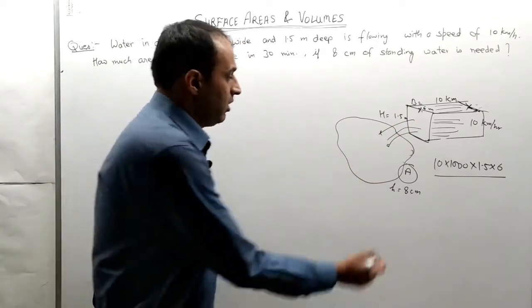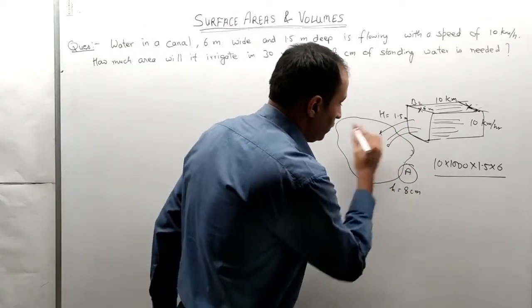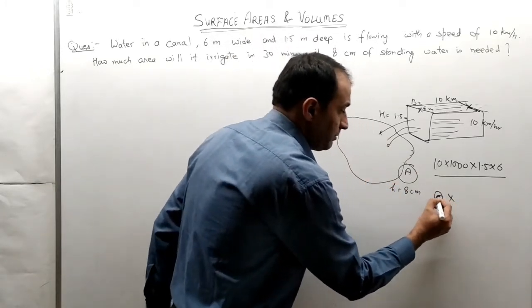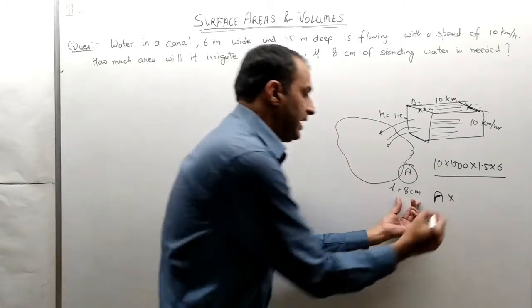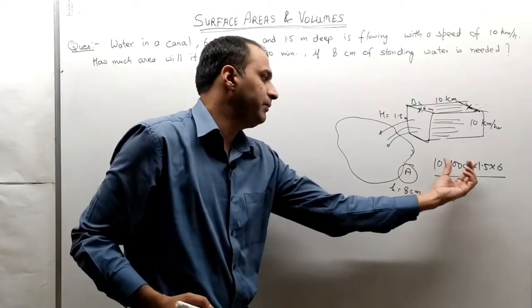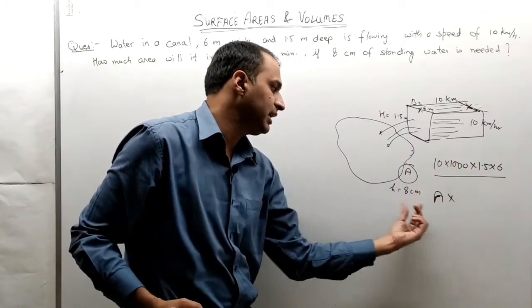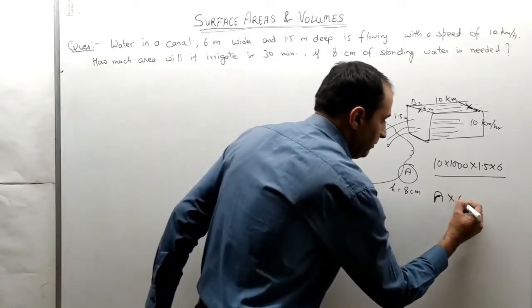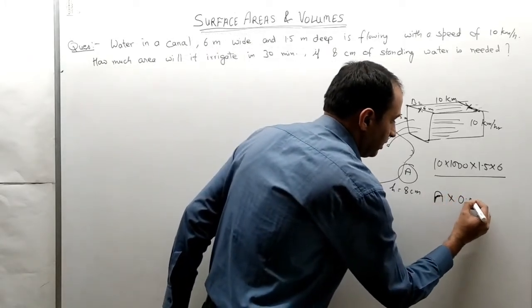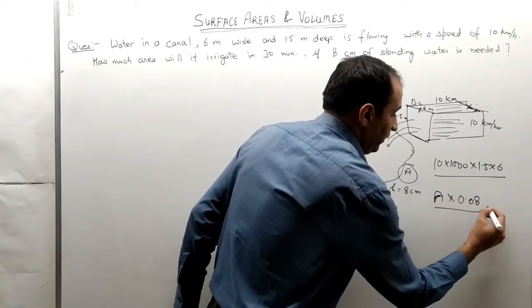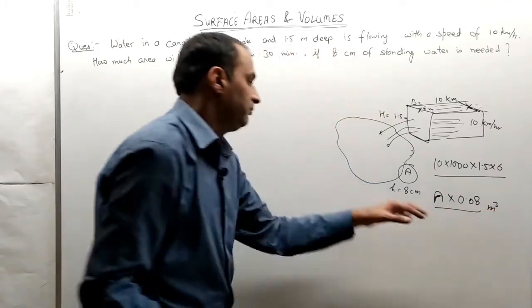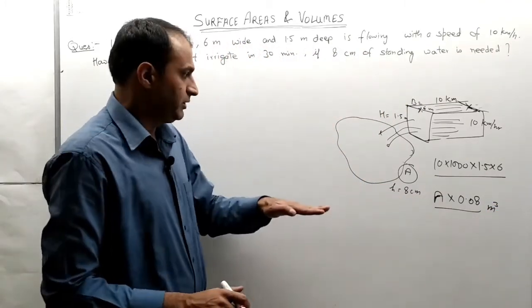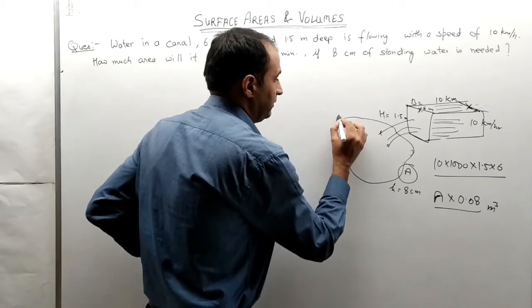This gives an area of height which is 8 cm. I can convert everything to meters and get units of meter cube. The area to irrigate corresponds to this height of 8 cm, which is the height of the standing water line.